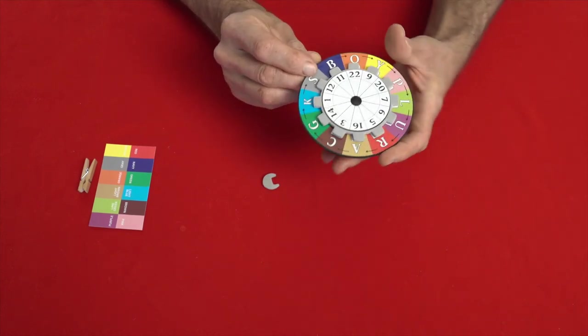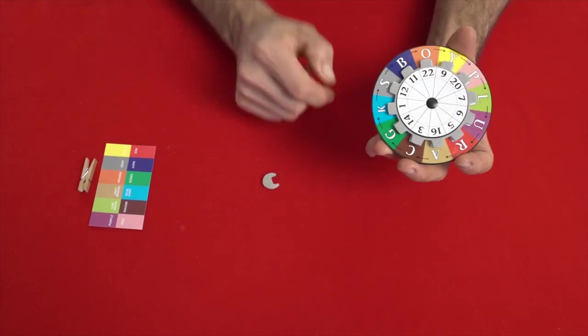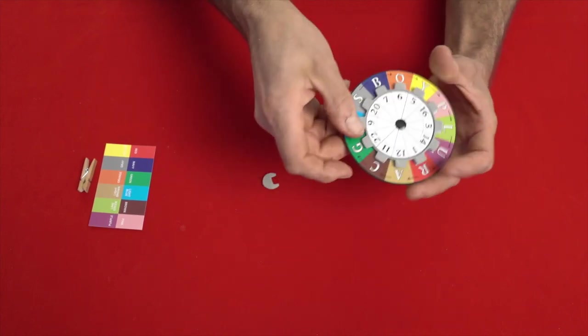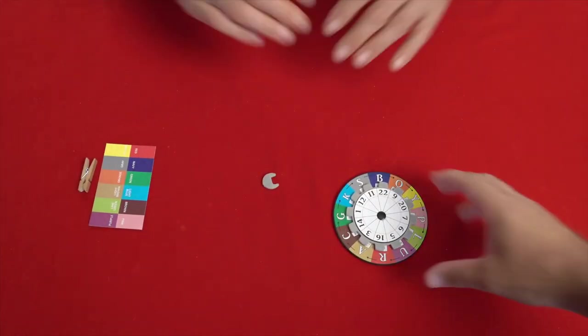I want you to make a completely random selection. To do so, I have a disc with letters and colors and a wheel with some numbers. As you see, the wheel can turn freely.